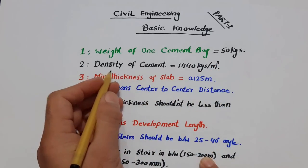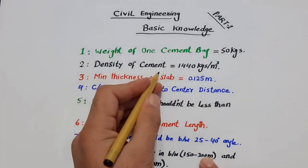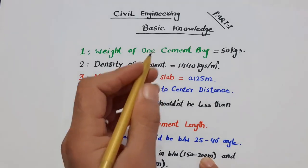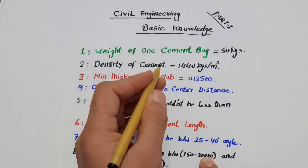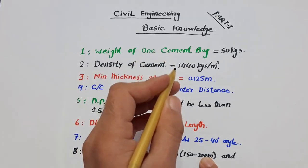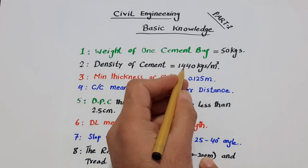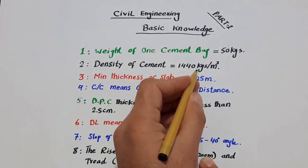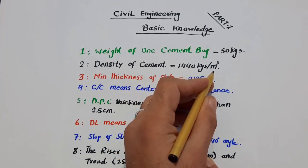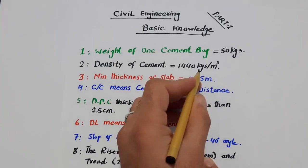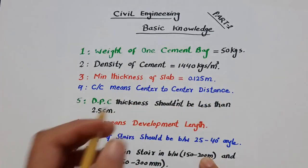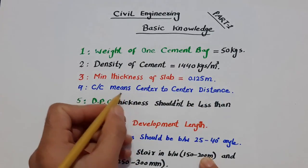The second one is the density of cement. The density of cement is 1440 kg per cubic meter.